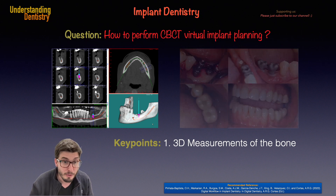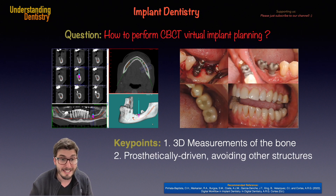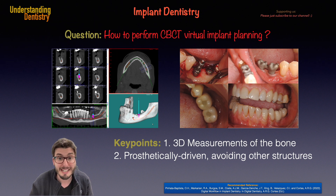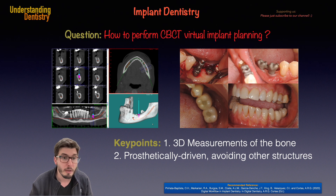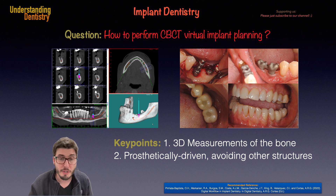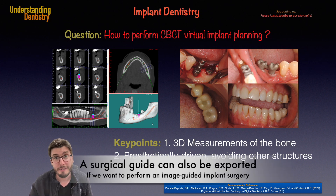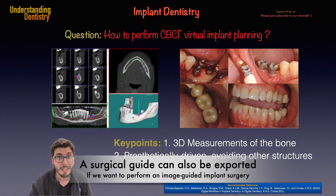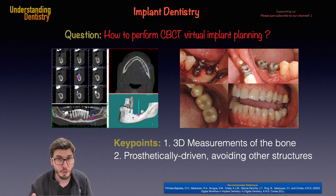This leads us to the second key point: the position of the implant should also be prosthetically driven — not only according to the availability of bone, but also according to the future prosthesis, because the implant will be restored with a prosthesis. There are several guidelines regarding where the final position of your implant should be, and I'll give you some examples since this is a short video.